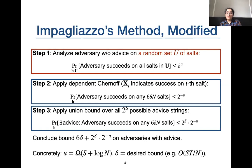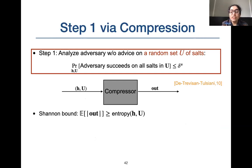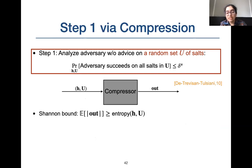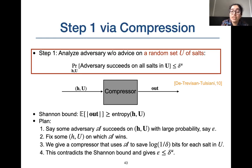Our modification is in step one: instead of analyzing the adversary on a fixed set, we analyze it on a random set U of salts. In step two, we use our variation of the dependent concentration result and the rest of the technique goes through as before. For analysis in step one, we used compression techniques. We gave a compressor that uses an adversary winning on some fixed h_U to compress h_U by u × log(1/δ) bits. This contradicts the Shannon bound and gives the probability of any adversary winning on a random h_U to be at most δ^u.